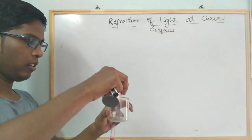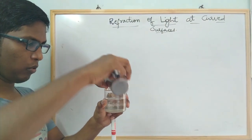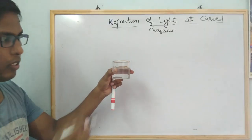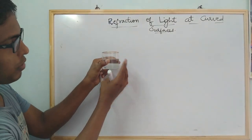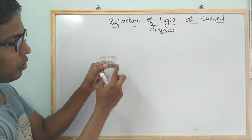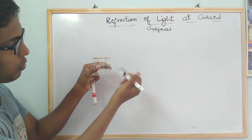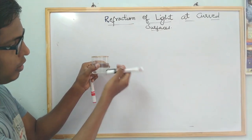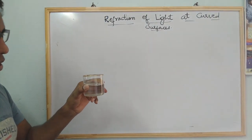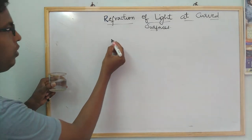Now I will consider water. I am pouring water into this glass. This is the curved surface, and this represents the separation of the two mediums. Now let us draw the diagram of this picture on the board.